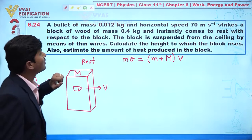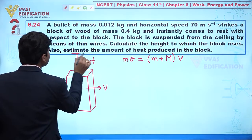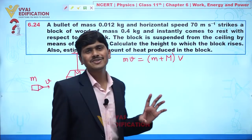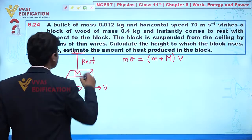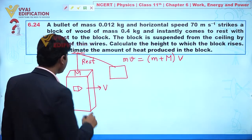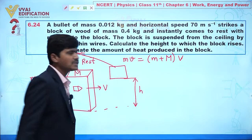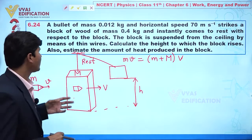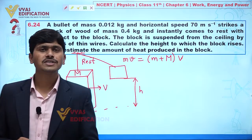The block is suspended from the ceiling by a thin wire. We need to calculate the height to which the block rises. First, we apply momentum conservation, and after that we apply energy conservation, because the block moves under gravity which is a conservative force, so we can apply conservation of mechanical energy.